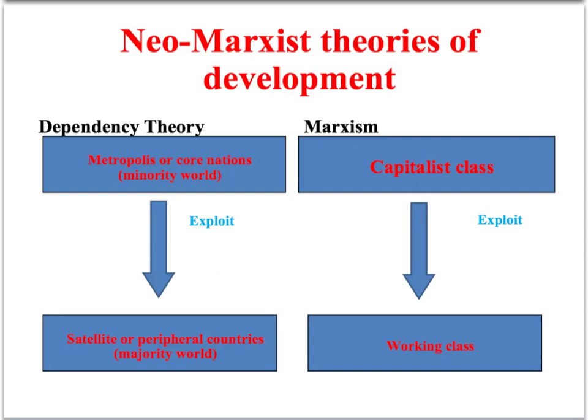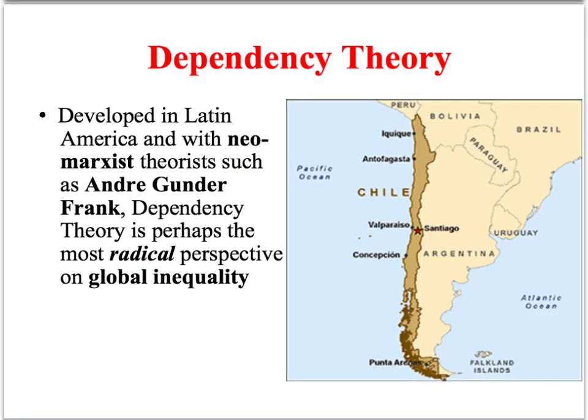Dependency theory is essentially a Marxist theory of development. Just as Marxists argue that within a capitalist economy you've got a small group — a capitalist class — who exploit a much bigger group, the working class, dependency theory argues that we've got a small group of core nations, what we've called the minority world, mainly concentrated in the global north, who exploit a much bigger group of nations — a periphery group of nations that we've called the majority world. The main name to remember when discussing this perspective is Andre Gunder Frank.